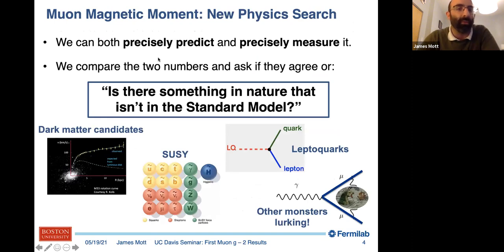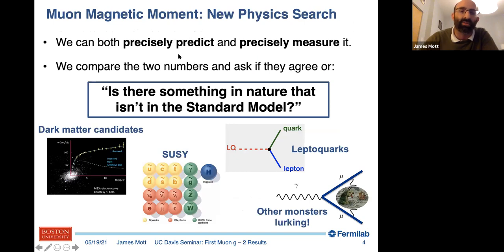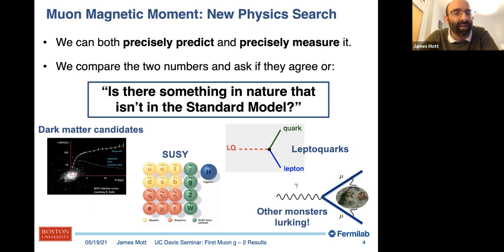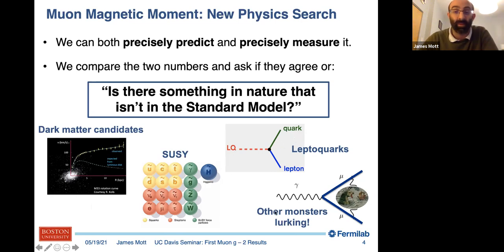Why would you care? The nice thing is that we can precisely predict and measure this quantity — that's what makes it particularly special. We take a precise prediction and precise measurements and compare the two numbers. The whole point of the experiment is to ask if they agree, or is there something in nature that isn't in the standard model. Options include dark matter candidates, SUSY which is still alive in some parts of phase space, and leptoquarks which have gotten more attention recently with the LHCb RK result. There could also be something altogether different lurking in this propagator.